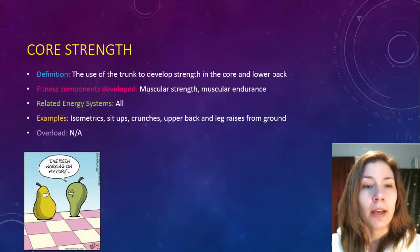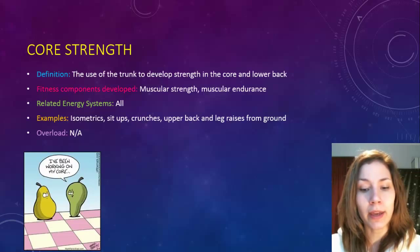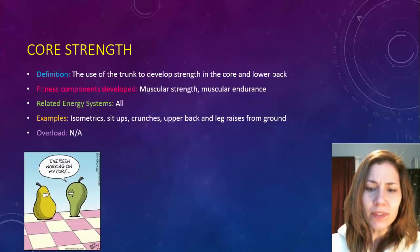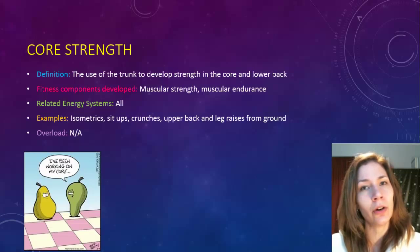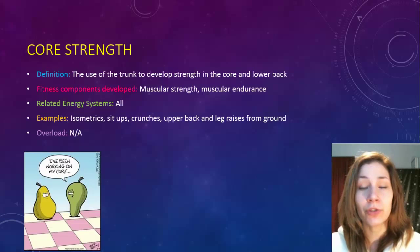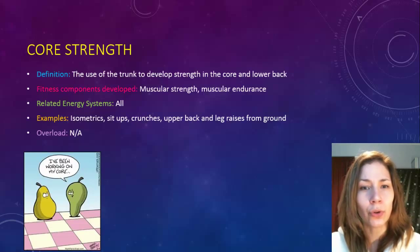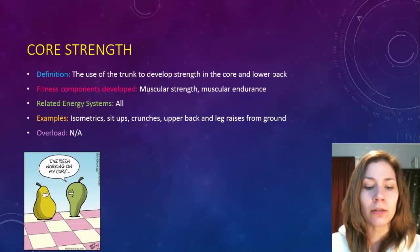Core strength is the use of the trunk to develop strength in the core and lower back — really important for everyday life and good posture. The older we get, the more resistant our bodies become to maintaining good posture, so having good core strength when you're younger is essential. Examples include isometrics where you tense your core muscles for a period of time, doing sit-ups and crunches, or exercises lying on your belly raising your upper back or doing leg raises — all developing core strength in that torso area.